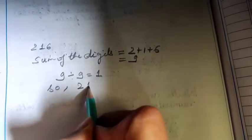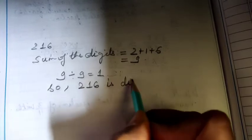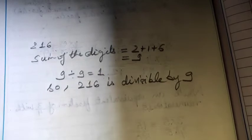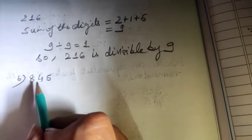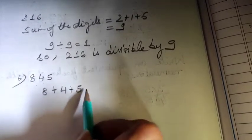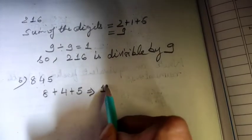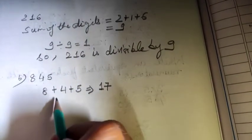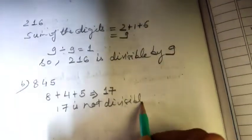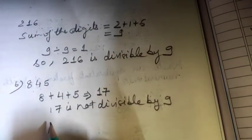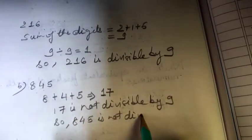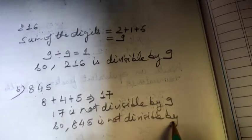The next number is 845. The sum of the digits is 8 plus 4 plus 5, which equals 17. Since 17 is not divisible by 9, we can say 845 is not divisible by 9.